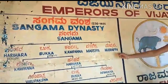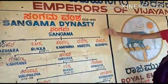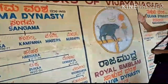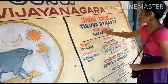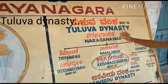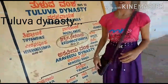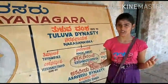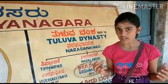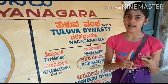Just here you can see the rulers of the Sangama dynasty, who were very great and ruled Hampi. Just after the Sangama dynasty, the Tuluva dynasty came, and here are the rulers of the Tuluva dynasty.